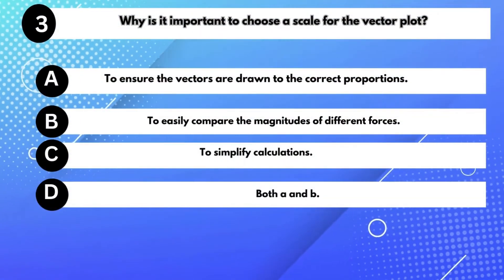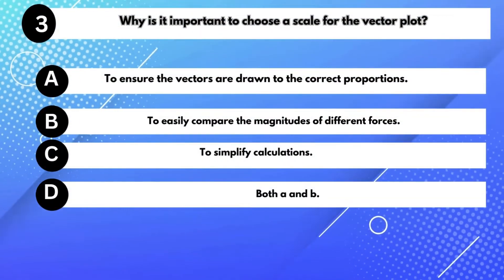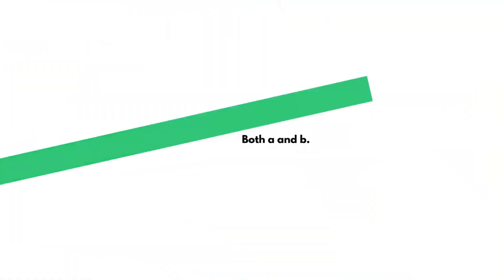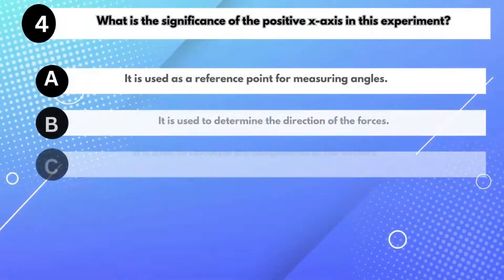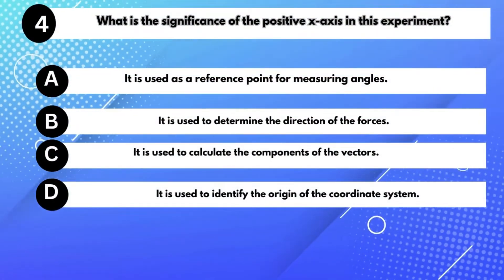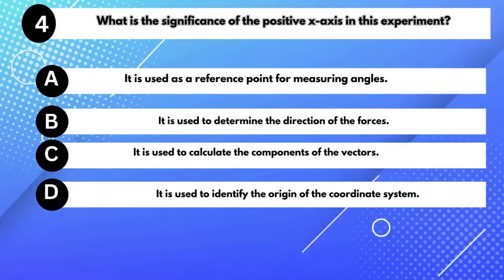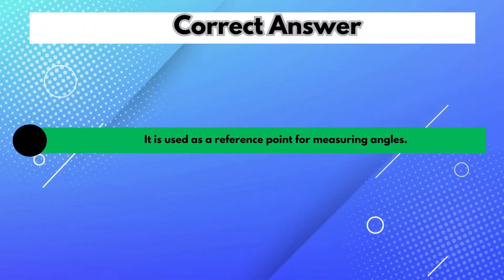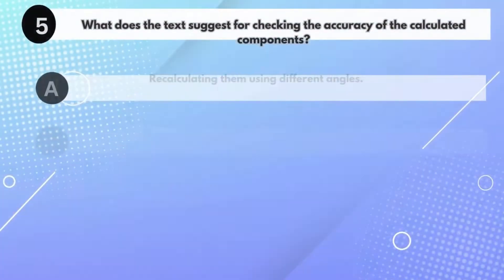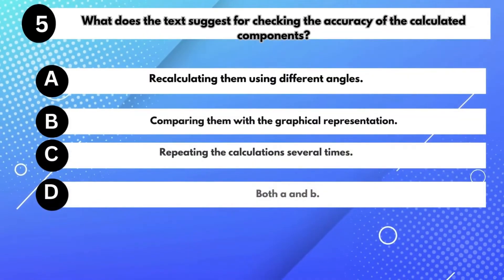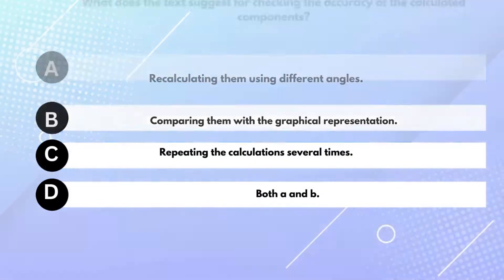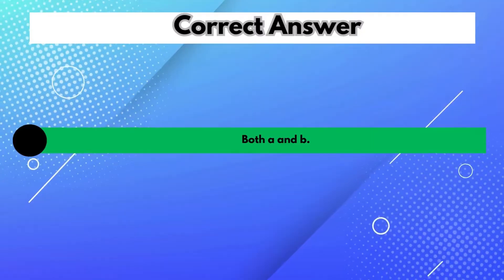Why is it important to choose a scale for the vector plot? Answer D: Both A and B. What is the significance of the positive x-axis in this experiment? Answer A: It is used as a reference point for measuring angles. What does the text suggest for checking the accuracy of the calculated components? Answer D: Both A and B.